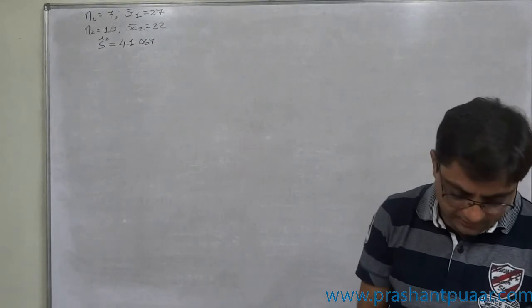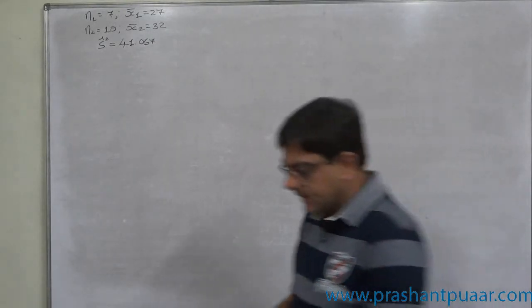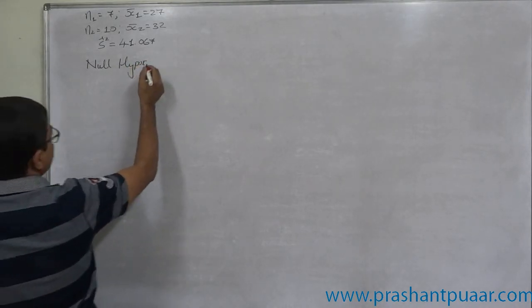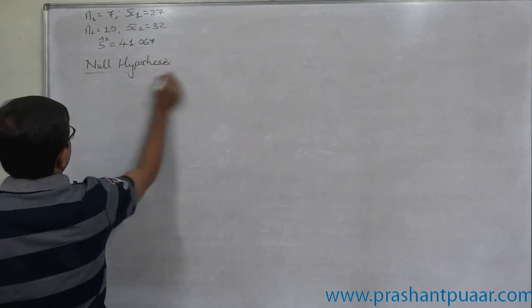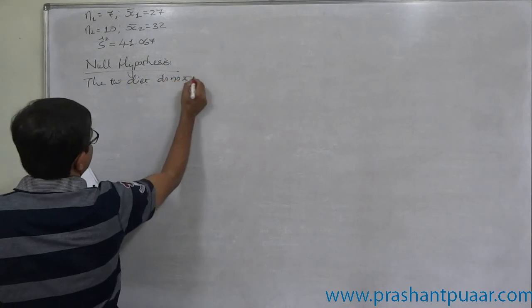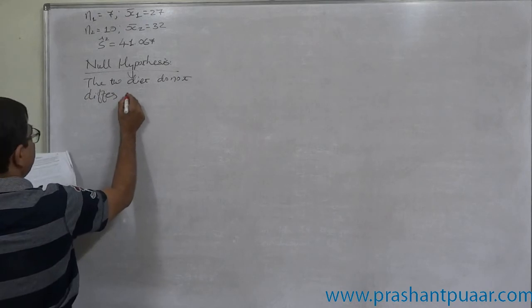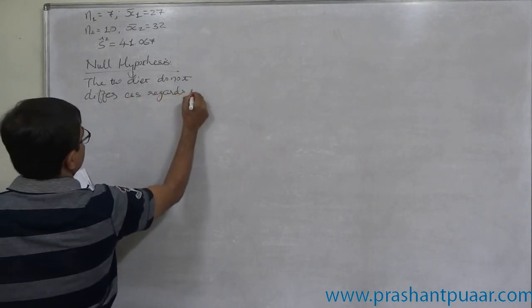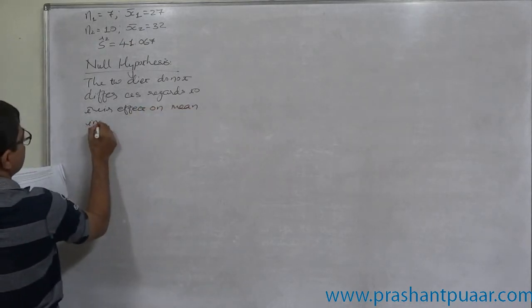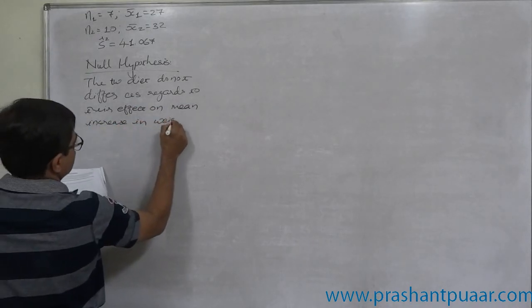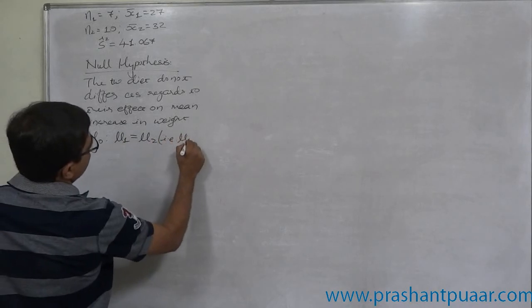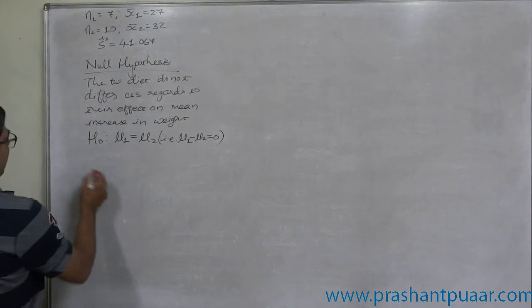Test at 5% level whether the two diets differ as regards to their effect on mean increase in weight. So now, the hypothesis is always for no difference. As I earlier stated, it is also known as the no difference hypothesis. The two diets do not differ significantly, or do not differ as regards to their effect on mean increase in weight. H₀: μ₁ = μ₂, or in other words, μ₁ - μ₂ = 0. The difference is 0.